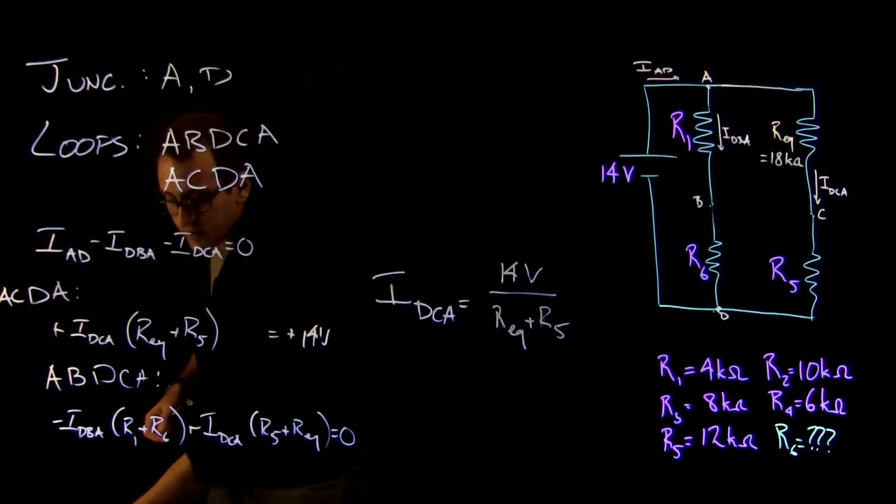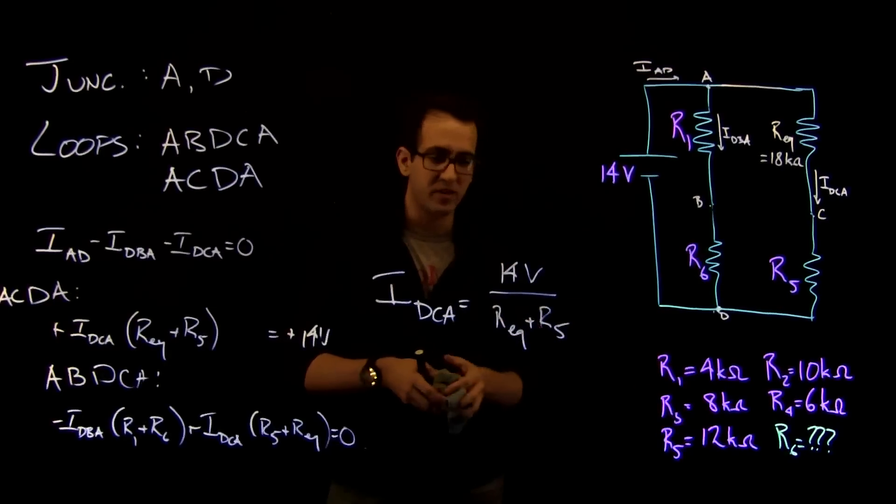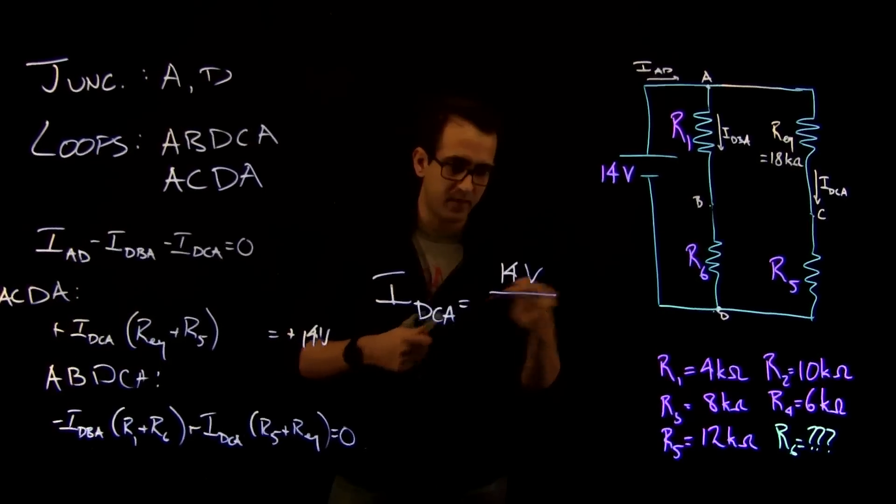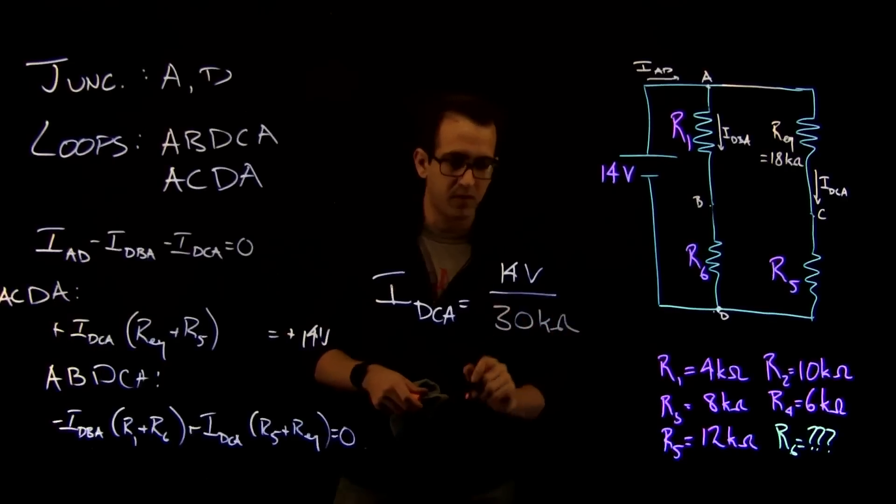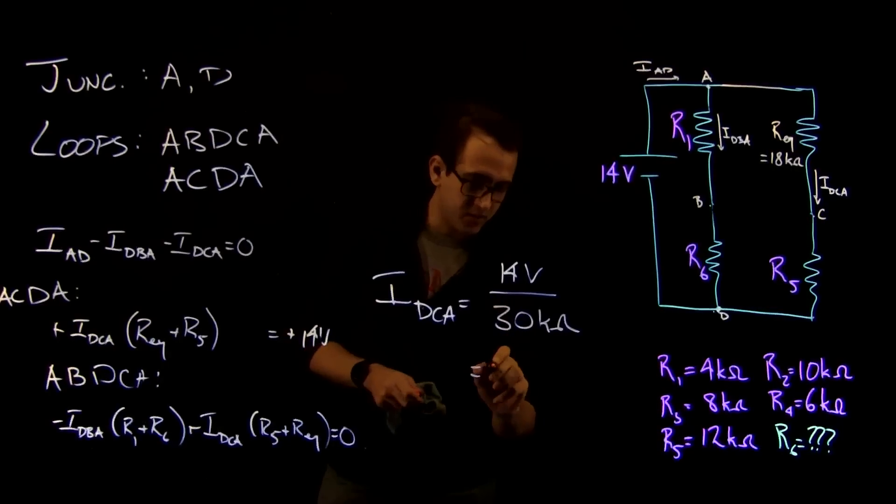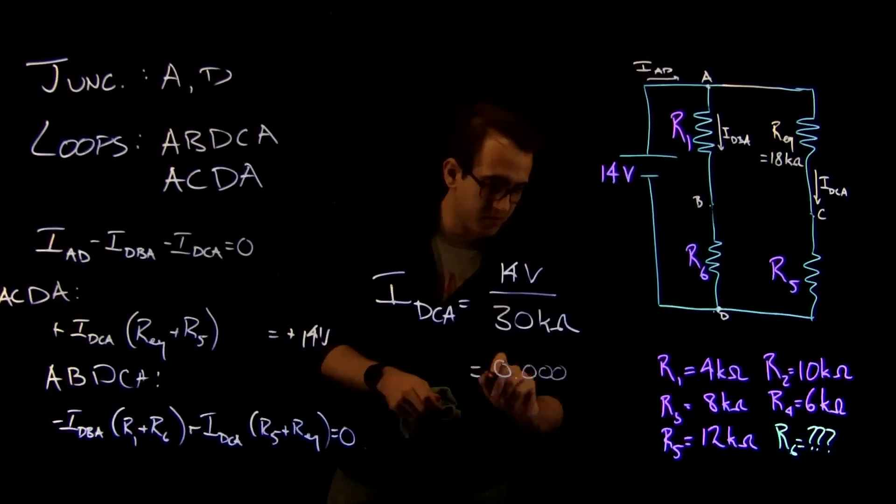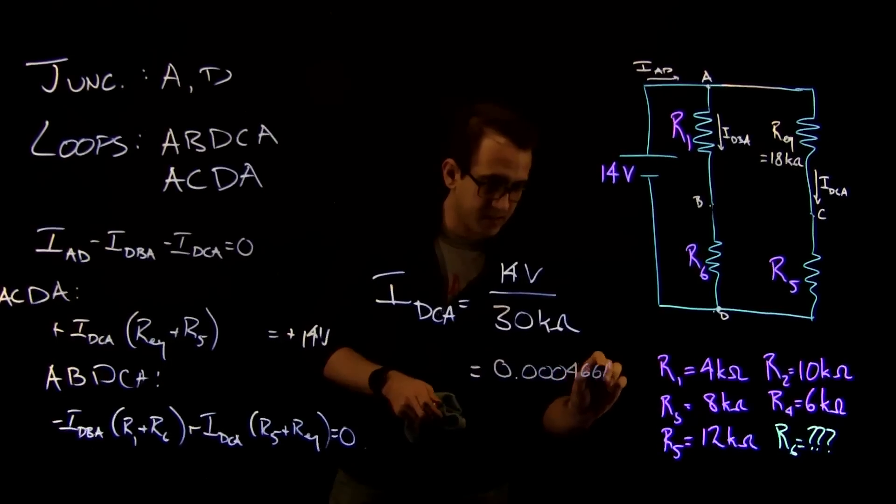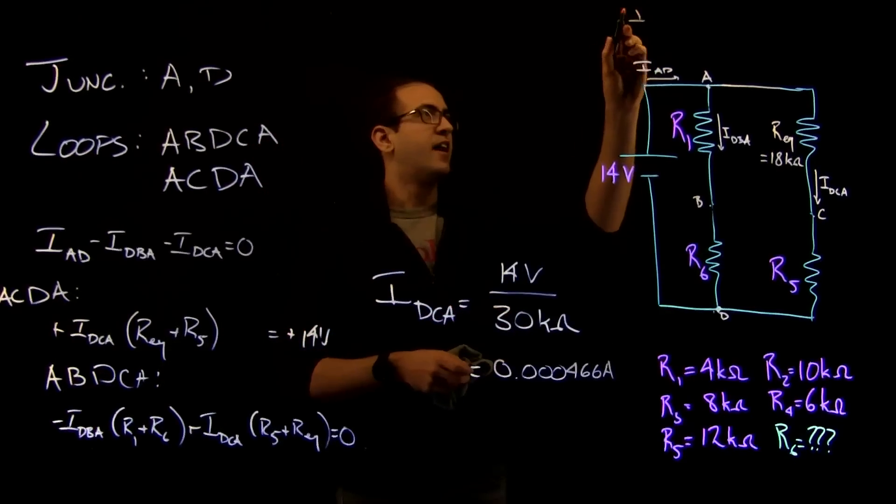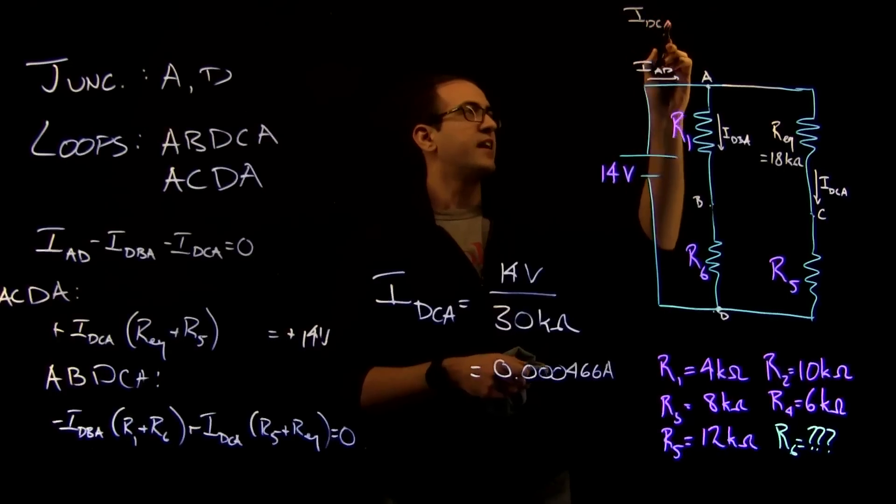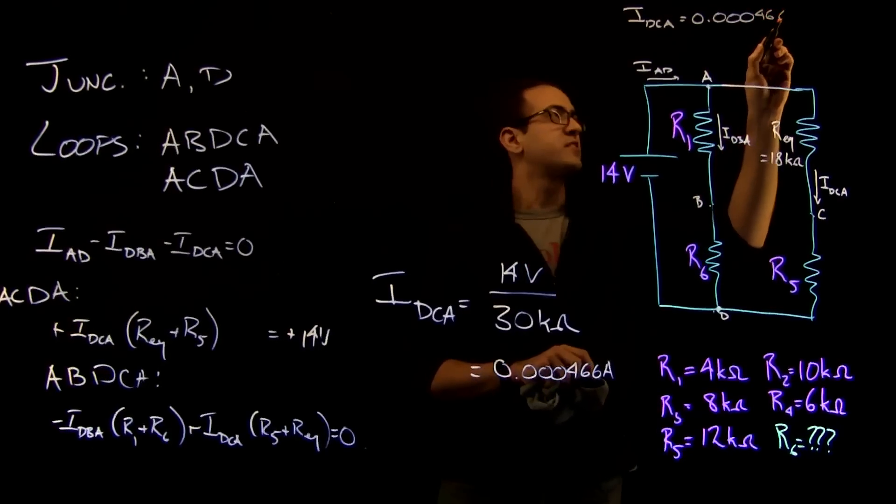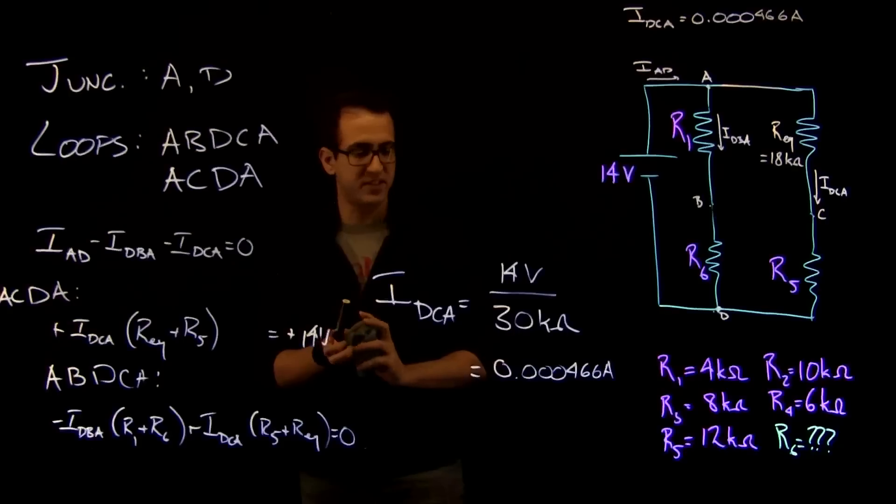Well, REQ plus R5, we know REQ is 18 kilo-ohms and R5 is 12 kilo-ohms, so that's going to be 30 kilo-ohms. And we know that 14 divided by 30,000 is just going to give us 0.000466 amps. Let's write that down. IDCA is equal to 0.000466 amps. That's going to come in useful in a second.